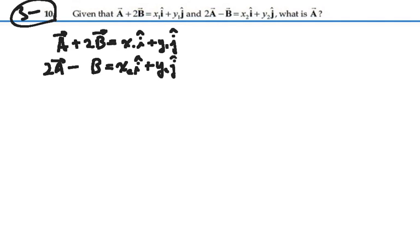We want to be able to get rid of one of these vectors. So let's multiply the second equation by 2 on both sides, and then we'll add these equations together.